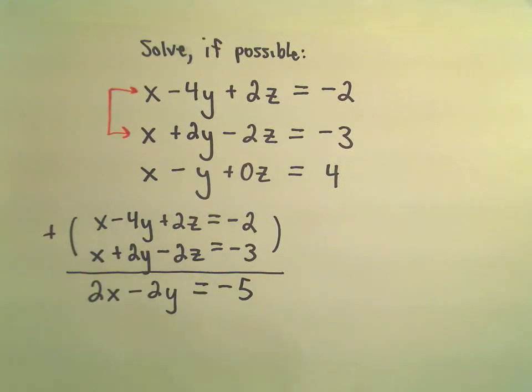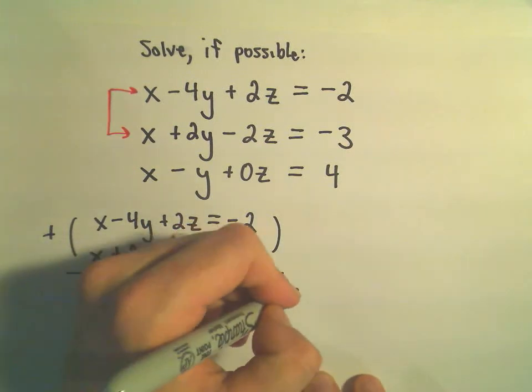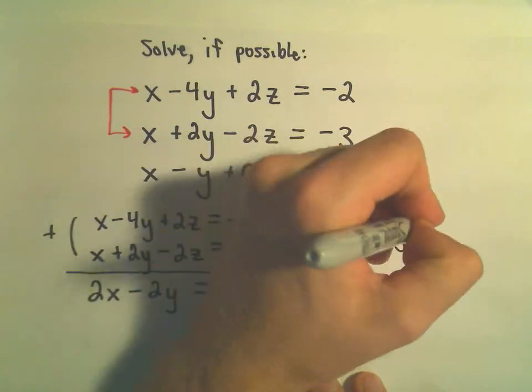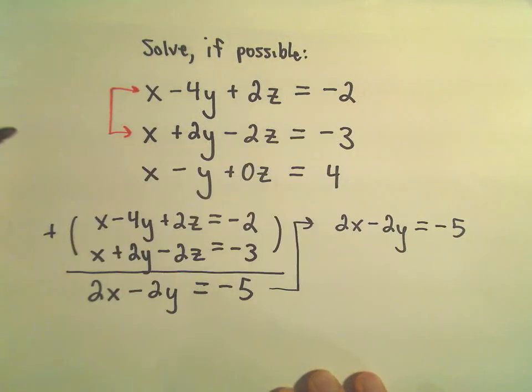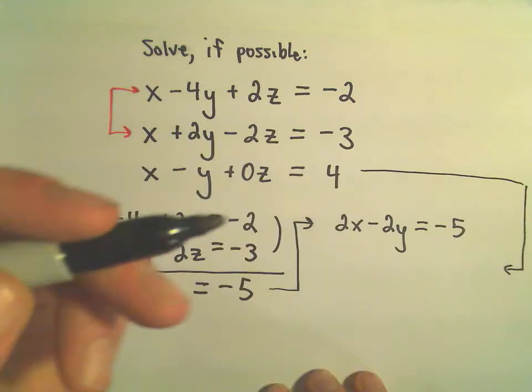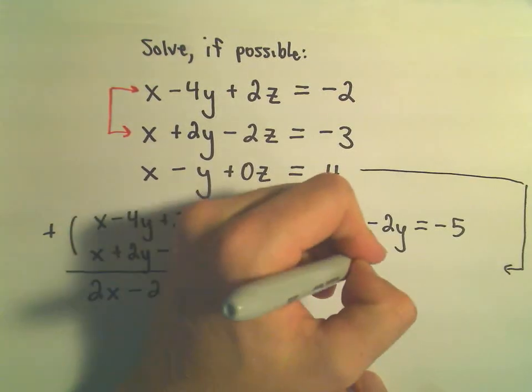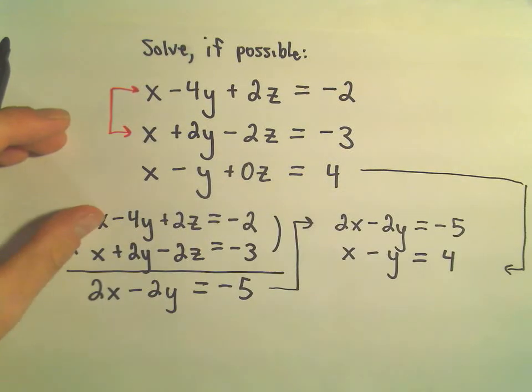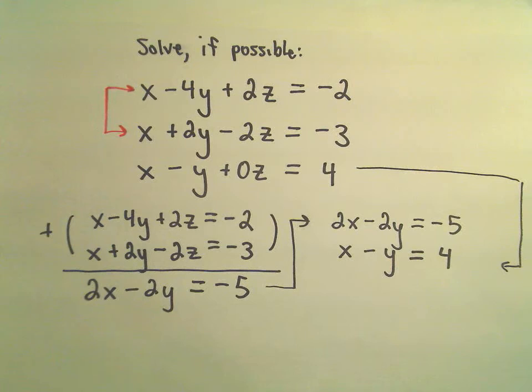So, now what I'm going to do is use this equation that we've just found. So, 2x minus 2y equals negative 5. And then I'm going to use my third equation that we had originally, which said x minus y equals 4. I'm going to try to eliminate one of my variables.